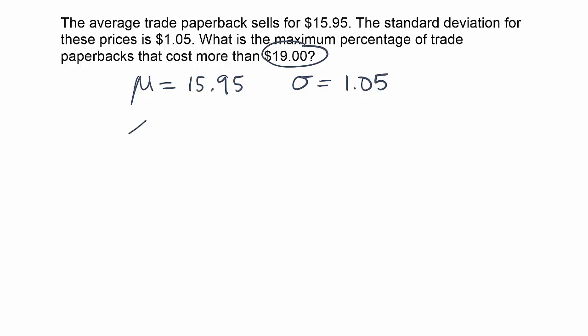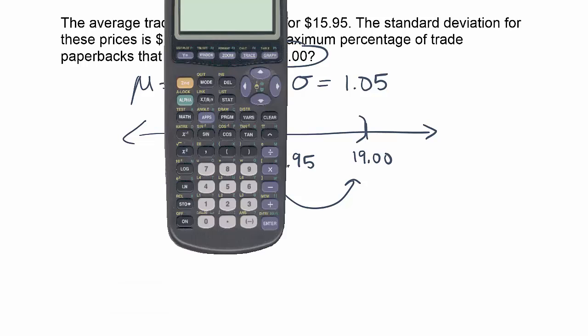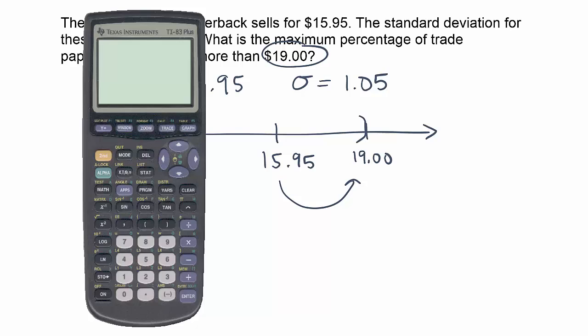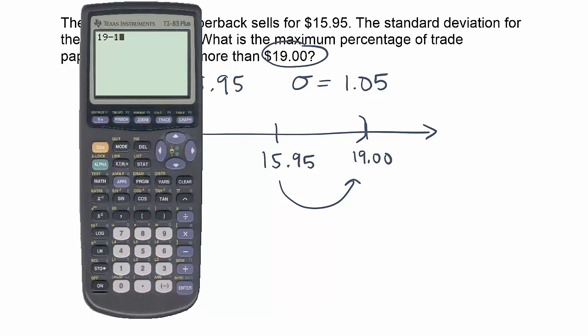So I'm going to put that on a number line with the mean. The mean would be here at $15.95, to give us a reference point. That tells me that $19 is on the other side, to the right of $15.95, because it's bigger. The thing about Chebyshev's theorem is that we're required to work with an interval that's symmetric around the mean. So what's the difference from $15.95 to $19? In other words, how far away is $19 from $15.95? We'll say $19 minus $15.95, and we get the answer $3.05.